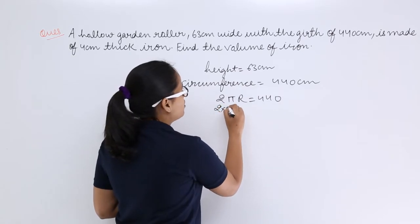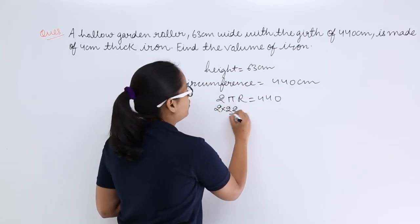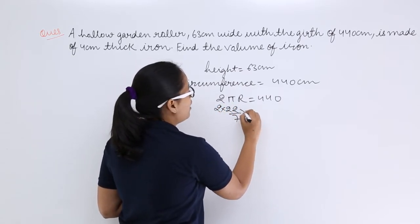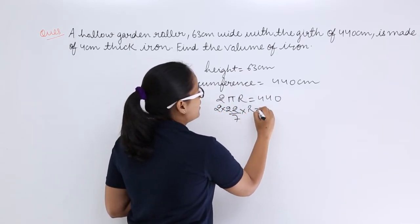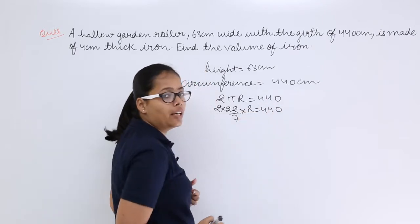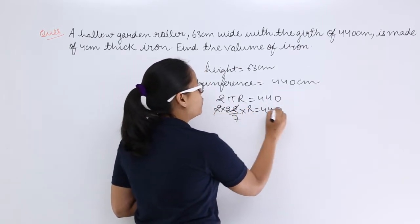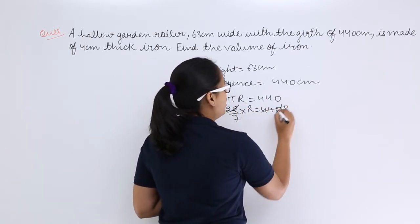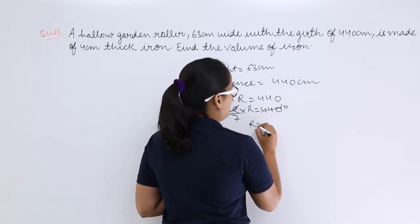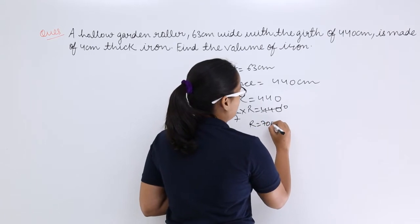Now let's put in the value of pi and calculate the external radius. The external radius will be 70 centimeter.